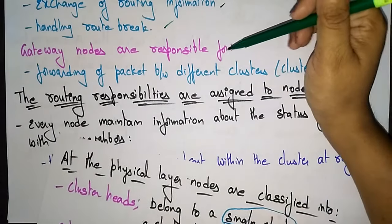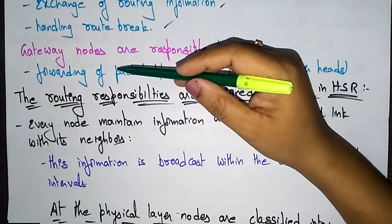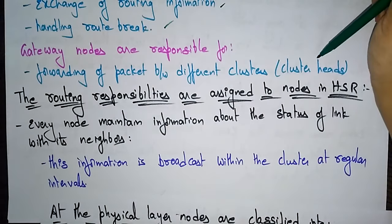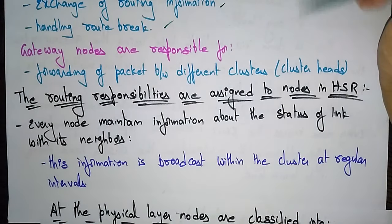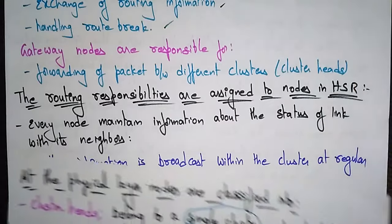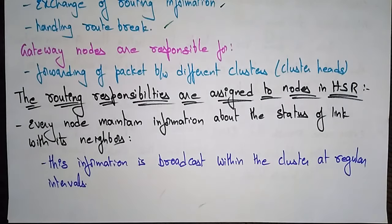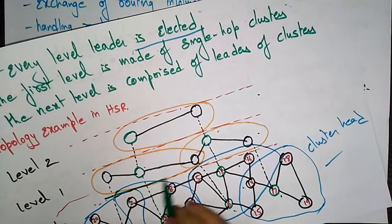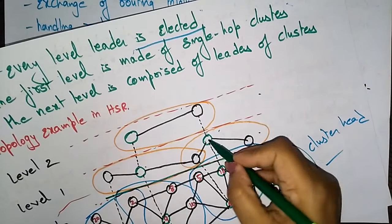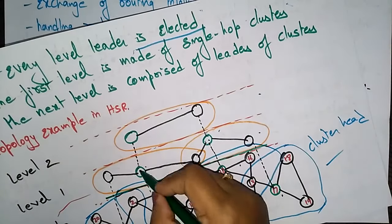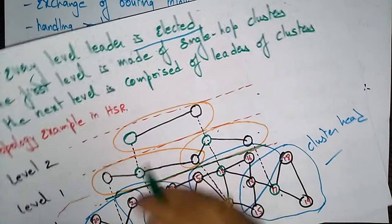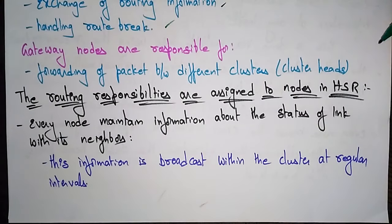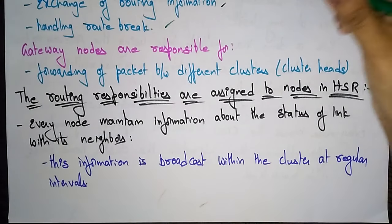The gateway nodes are responsible for forwarding of packets between different clusters, that is between cluster heads. Gateway nodes belong to two or more clusters, passing packets between gateway clusters and forwarding packets between different cluster heads.